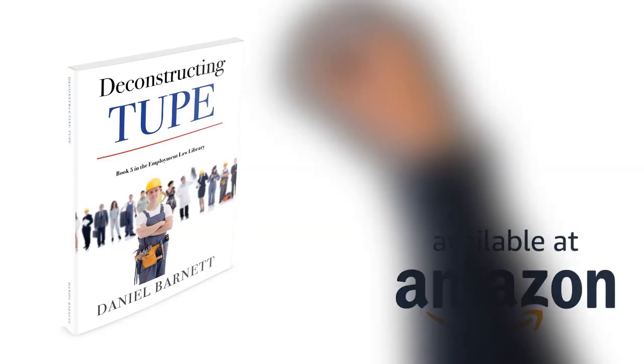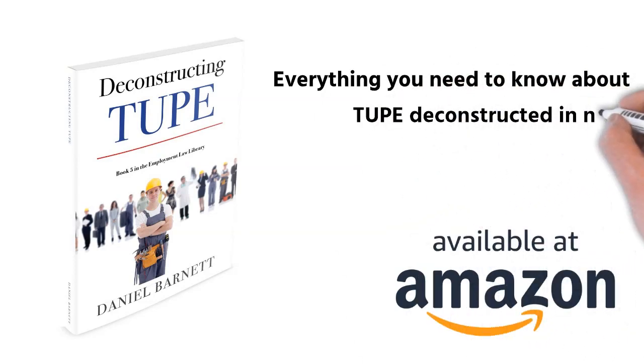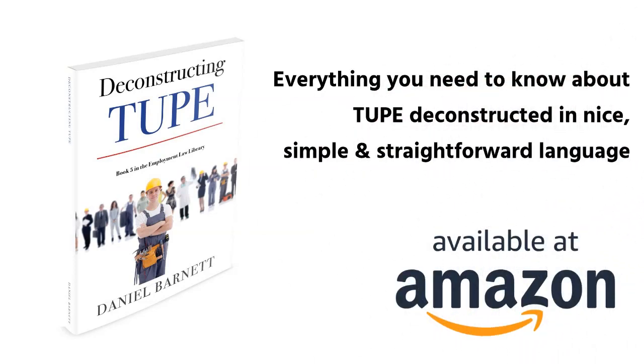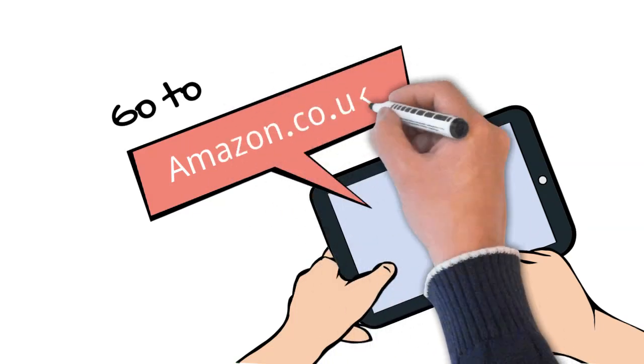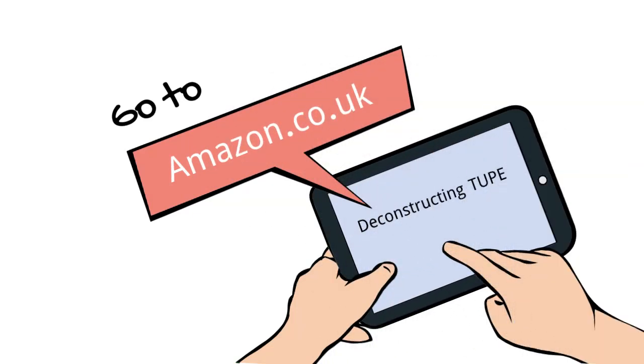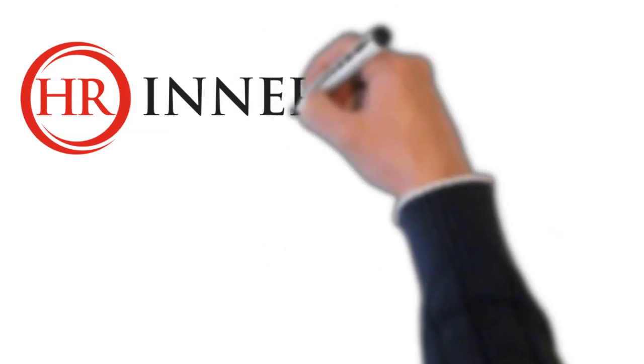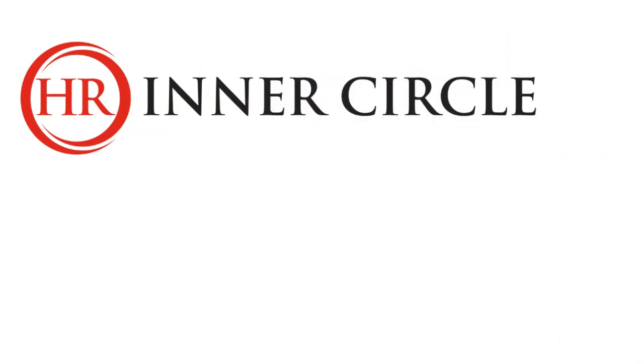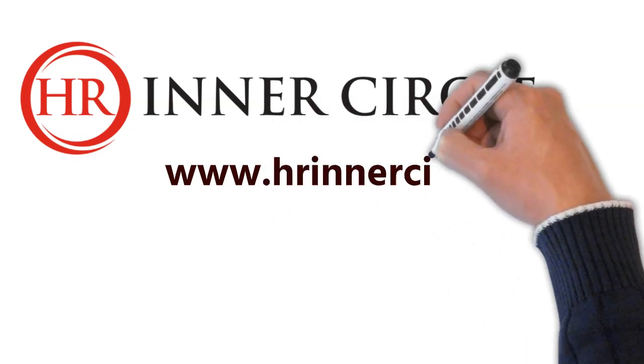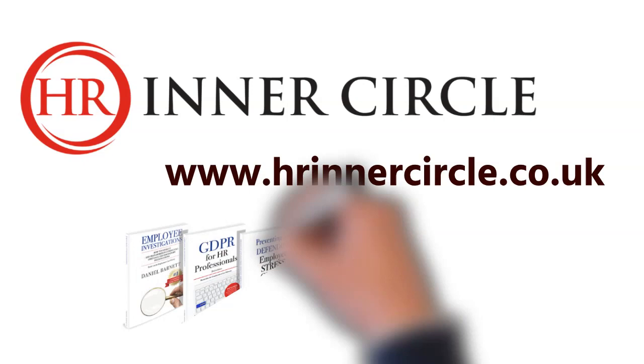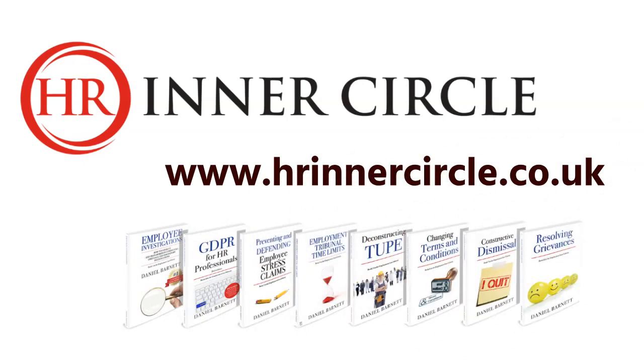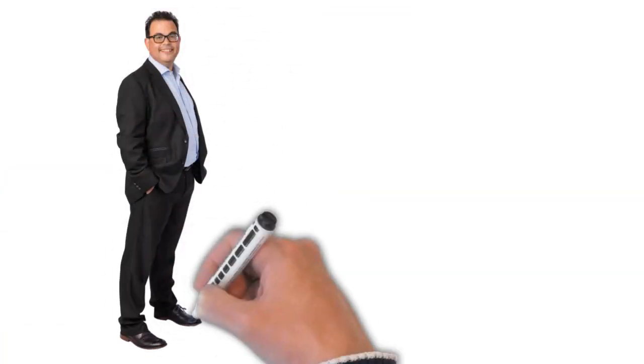It's less than a hundred pages long and it gives you everything you need to know about TUPE deconstructed in nice, simple, straightforward language. You can get hold of a copy of that and all my other books on Amazon by going to amazon.co.uk and searching for Deconstructing TUPE or indeed searching for my name, Daniel Barnett. Or if you join the HR Inner Circle, my membership club for smart, ambitious, standalone HR professionals at www.hrinnercircle.co.uk, you'll get copies of all my small books as soon as they're published. We typically publish two a year. Plus you'll be sent all the books published to date, including Deconstructing TUPE. Thank you so much for listening. I'm Daniel Barnett. Bye bye.